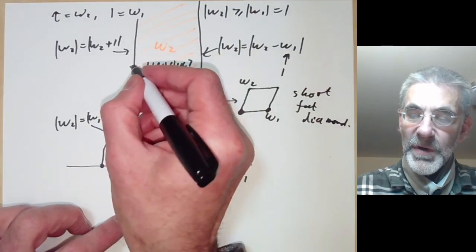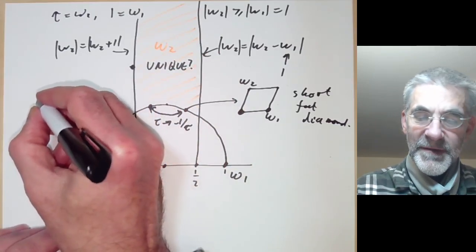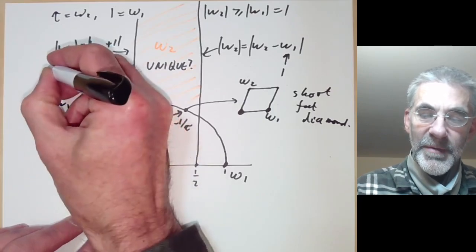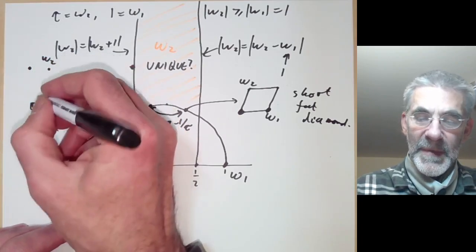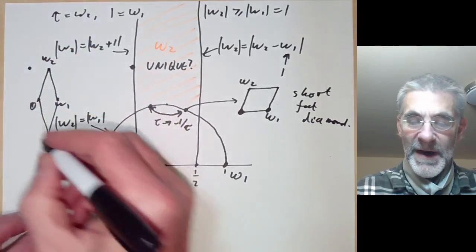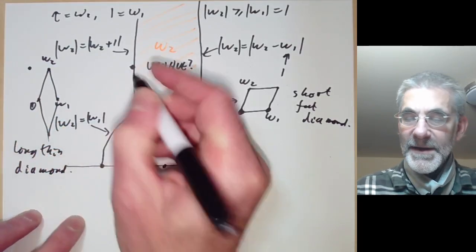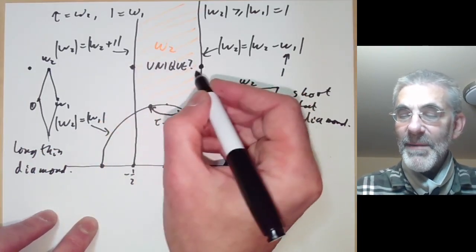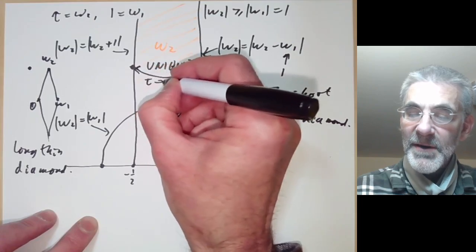Similarly if we've got a point here it corresponds to a sort of long thin lattice because we might have 1 here and omega-1 here and omega-2 might be say up here but it could also be here. So these correspond to lattices where the fundamental domain is a long thin diamond. And again if omega-2 is here it corresponds to the same lattice as if omega-2 is here. So these two points correspond and they're joined by sending tau to tau plus 1.